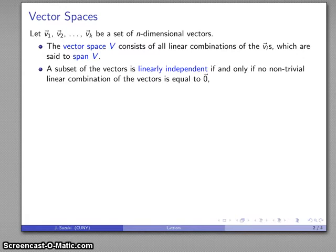A subset of the vectors is said to be linearly independent if and only if there is no non-trivial linear combination of the vectors equal to the zero vector. A trivial linear combination—zero of these, zero of these, and zero of everything—well that's trivial, but if I can find some non-trivial linear combination of the vectors equal to the zero vector, then the set of vectors is not linearly independent.